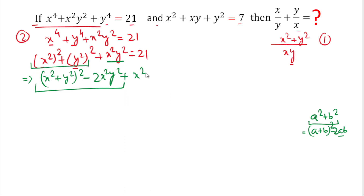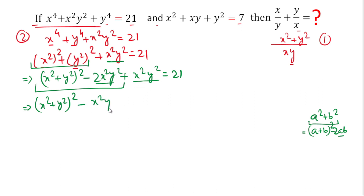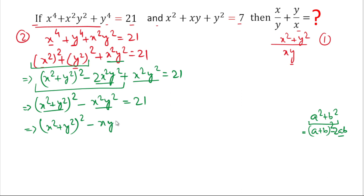Simplifying, we get (x² + y²)² - 2x²y² + x²y² = (x² + y²)² - x²y² = 21. This is now in the form a² - b², where a = x² + y² and b = xy, since x²y² = (xy)². So we have (x² + y²)² - (xy)² = 21.